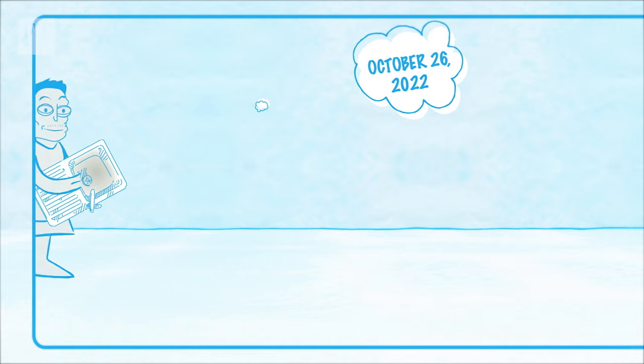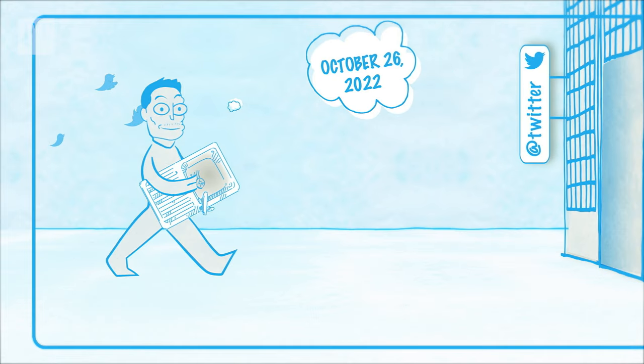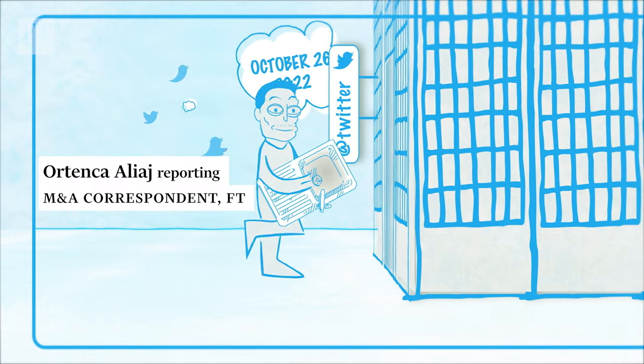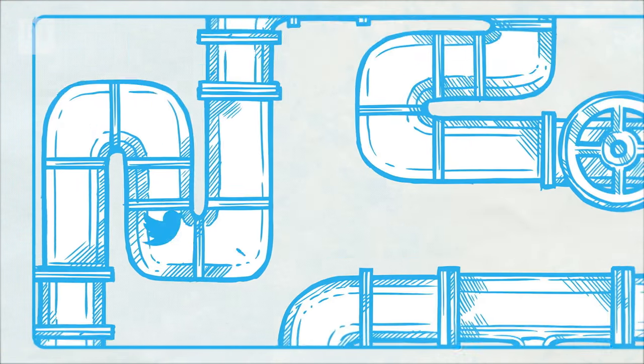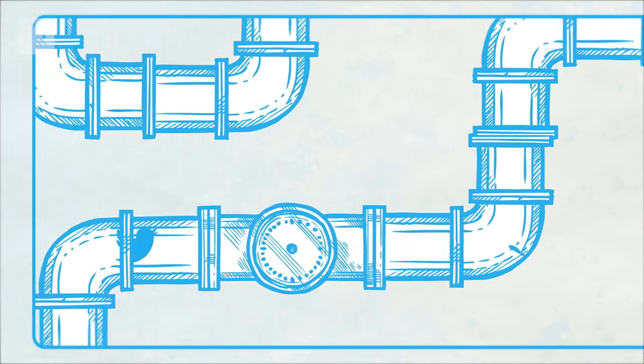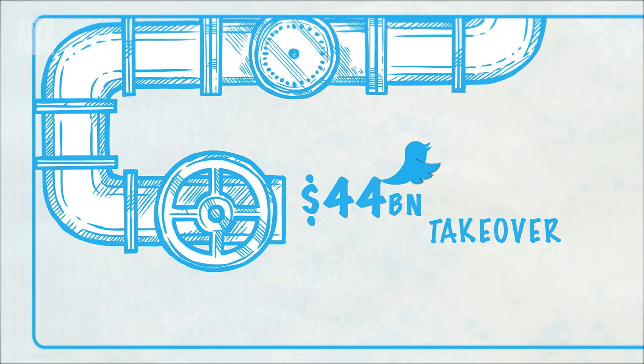On October 26th last year, Elon Musk walked into the Twitter offices carrying a kitchen sink. It was an appropriate end to a draining few months for everyone who had followed the twists and turns of his $44 billion takeover of Twitter.